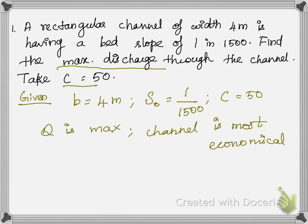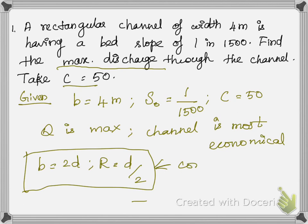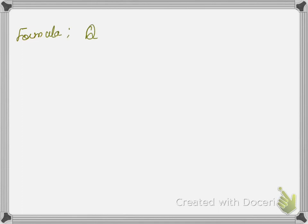Maximum discharge means the channel will be the most economical section, and we can apply the conditions: b is equal to 2d, and r is equal to d by 2. Since the hint is the Chezy constant, we use the Chezy formula: Q equals A times C times the square root of r times S₀. We know C and S₀; the unknowns are A and r.